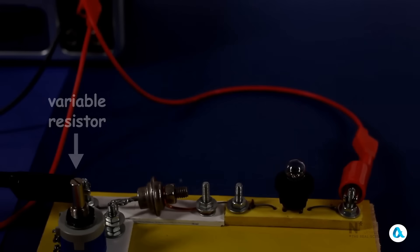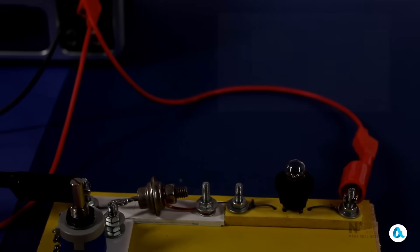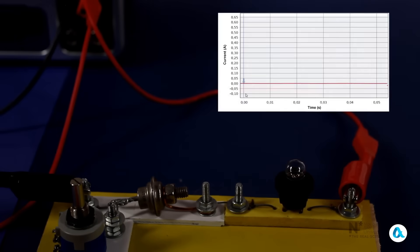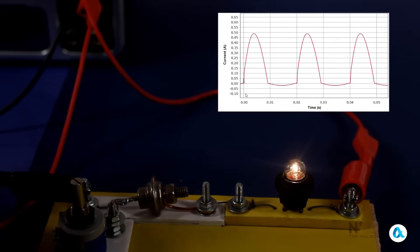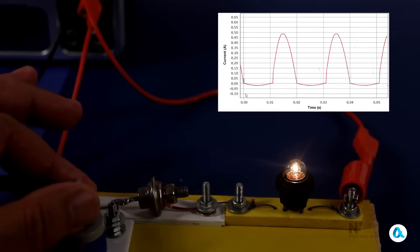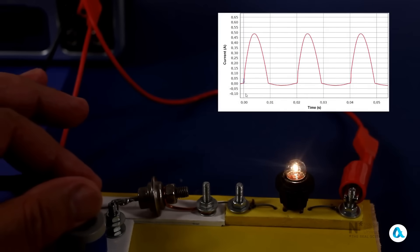Let's place a variable resistor in the thyristor control circuit. And we have created the simplest dimmer, a device that controls the brightness of a lamp. Let's power the lamp with alternating current. Let's start the control. The bulb lights up, and on the oscilloscope, we see that the thyristor cuts off the negative and leaves the positive half waves.